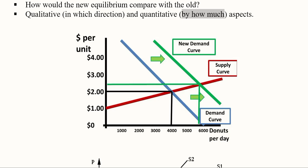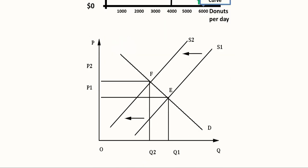The new demand curve, intersecting the old supply curve, gives rise to a new equilibrium — 6,000 as the equilibrium output and somewhere between two and three dollars as the equilibrium price. If demand is increasing favorably, equilibrium output increases as well as the price, depending on elasticities. We can compare these two equilibria and see that both values have increased.